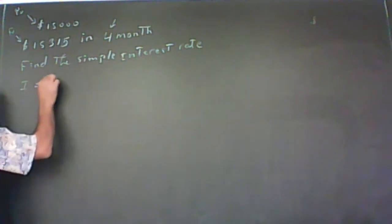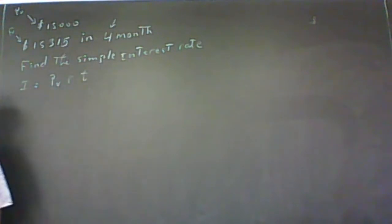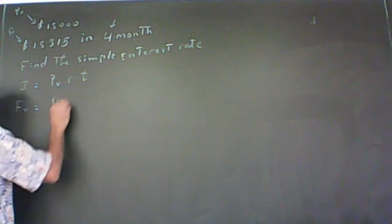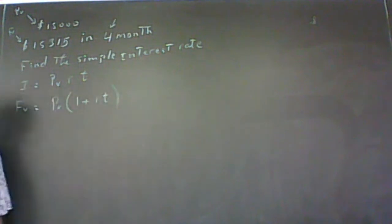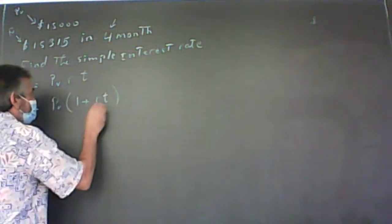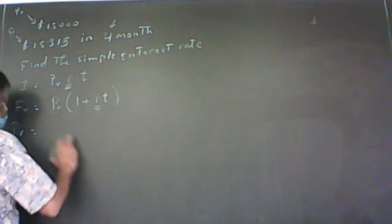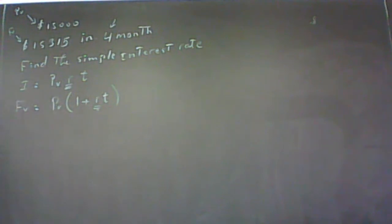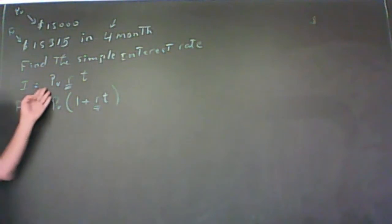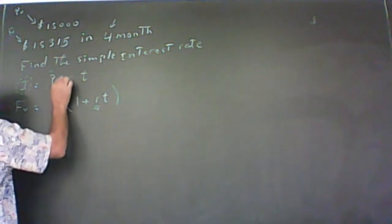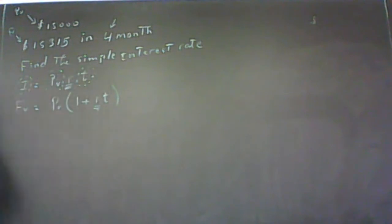We know FV = PV × (1 + R × T). The factor we're looking for is R. We also have the present value formula: PV = FV / (1 + R × T). If I want to use the interest formula I = PV × R × T, I need I, PV, and T. I know all three — I can find the interest by subtracting FV minus PV.